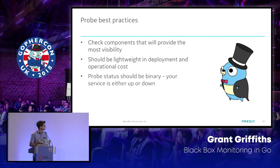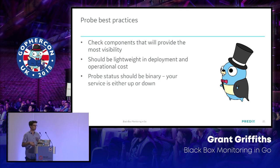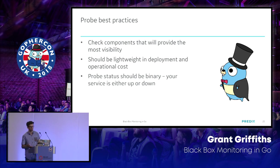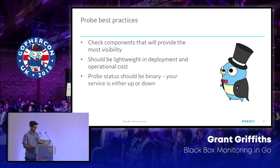A few best practices: check components that provide the most visibility. If two query services cover most of your system's components, query those rather than doing individual checks. Probes should be lightweight in deployment and operational cost — if your service creates a dedicated cluster on each instance, running it every five seconds would be far too expensive. Probe status should be binary: your service is either up or down. There shouldn't be an in-between 'maybe up' state.